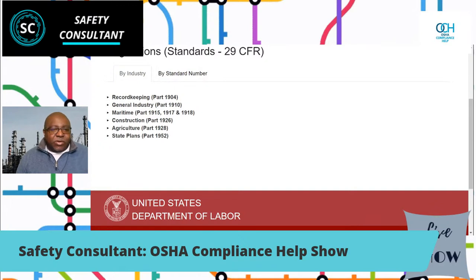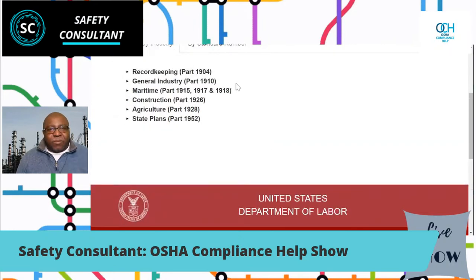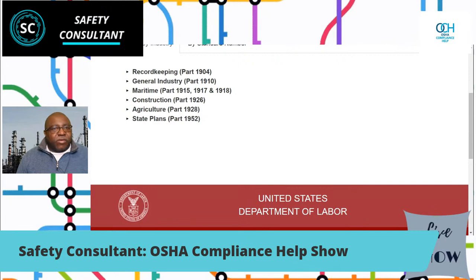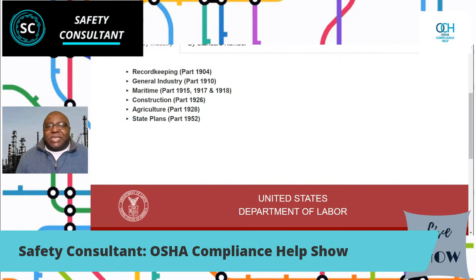You don't see this on this page, but you should also be aware of Part 1903 — that's how OSHA does their inspections. If you're familiar with record keeping, that will also lead you to areas specific in general industry, like Subpart O, which is machine guarding. There are some record keeping parts in that subpart, so you would have exceptions to that rule as well.